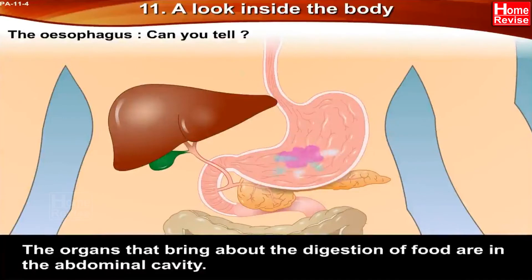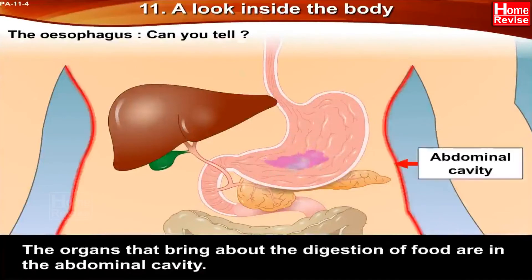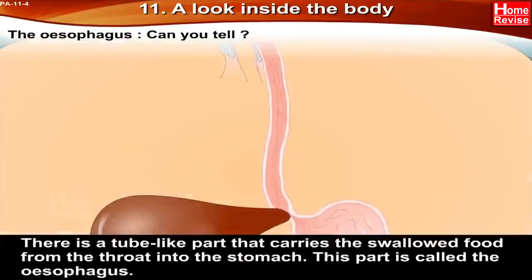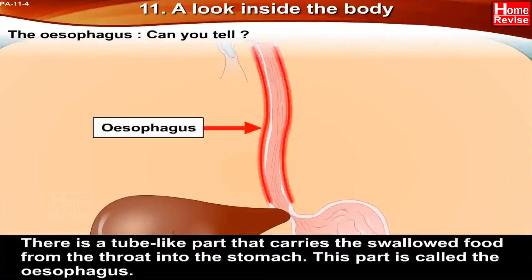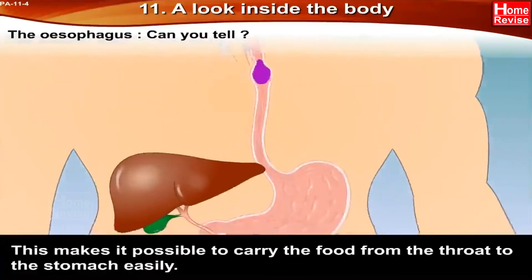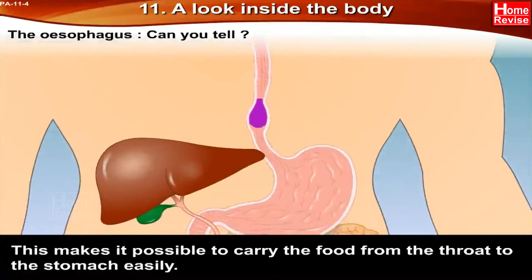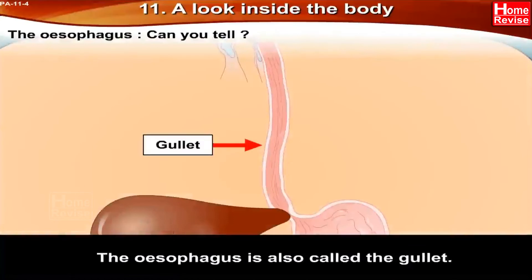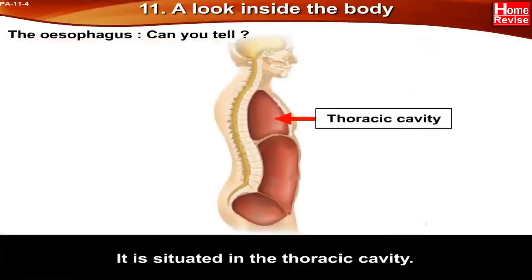The organs that bring about the digestion of food are in the abdominal cavity. There is an organ called the stomach which stores the food we have eaten for a short while. There is a tube-like part called the esophagus, also known as the gullet, that carries swallowed food from the throat into the stomach. Its walls are flexible, making it easy to carry food from the throat to the stomach. The esophagus is situated in the thoracic cavity.